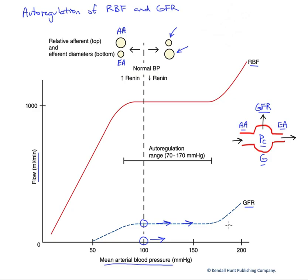This is a very potent mechanism. Mean blood pressures up to about 170 mmHg produce almost no change in GFR. We can also drop down to a mean arterial pressure of about 70 mmHg and still maintain GFR. This is really important — it means different people with different blood pressures, or the same person under different physiological conditions, can maintain their renal function.